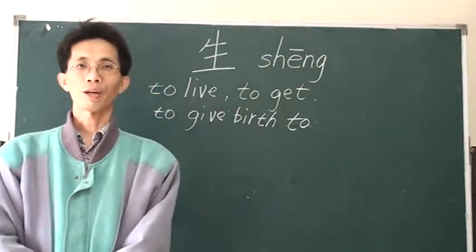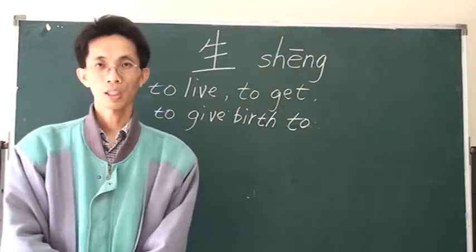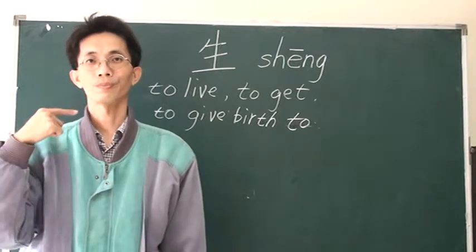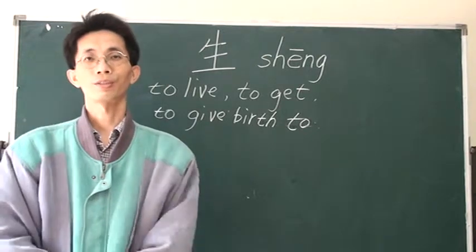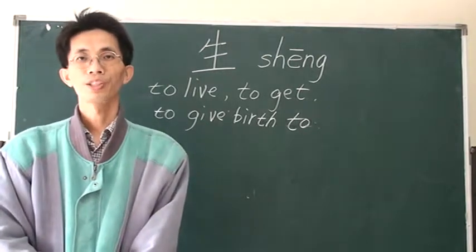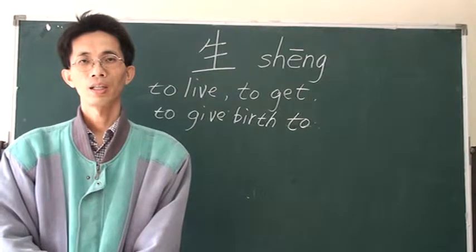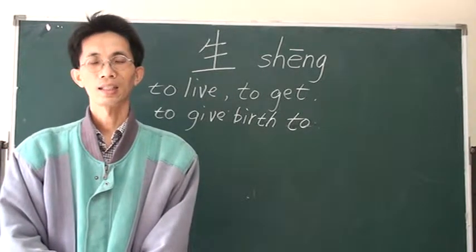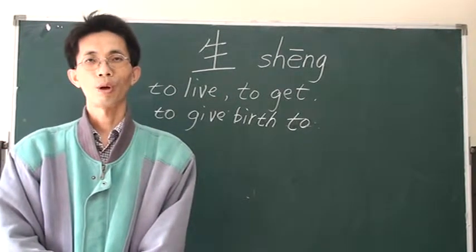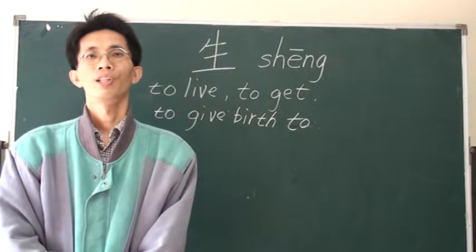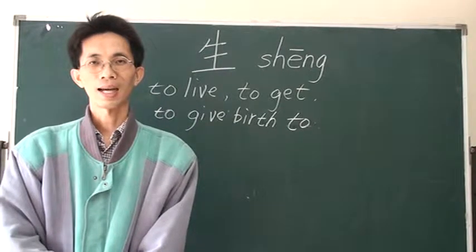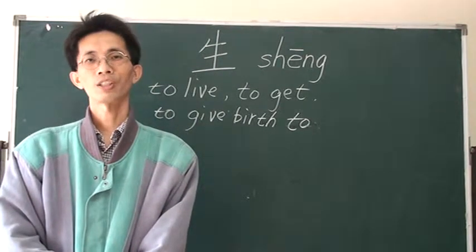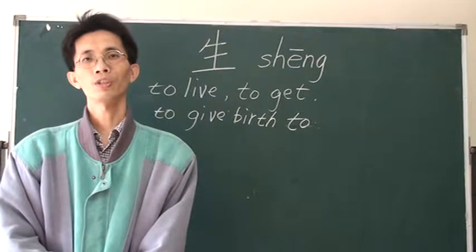To say the character correctly, you have to curl your tongue a little, like this. 生, 生, not 生. One more time: 生, not 生.